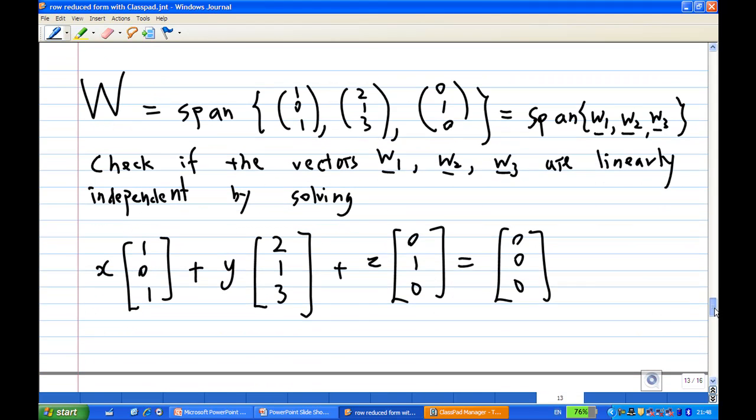Next, let's look at W now. W is the space spanned by {(1,0,1), (2,1,3), (0,1,0)}. Let's call these three vectors w1, w2, w3. Now, we're going to check if the vectors w1, w2, w3 are linearly independent by solving the equation: x(1,0,1) + y(2,1,3) + z(0,1,0) = (0,0,0).